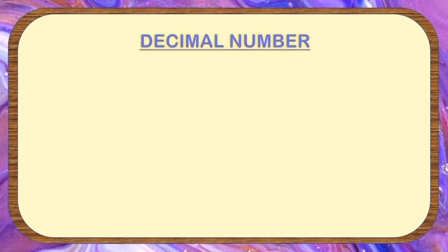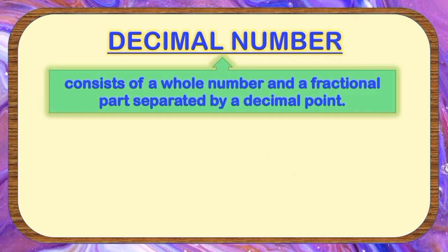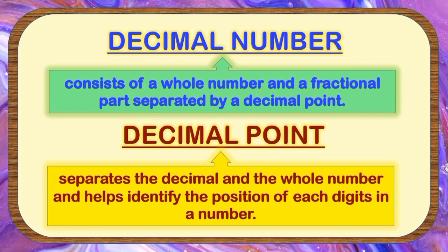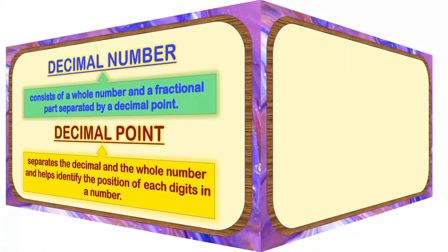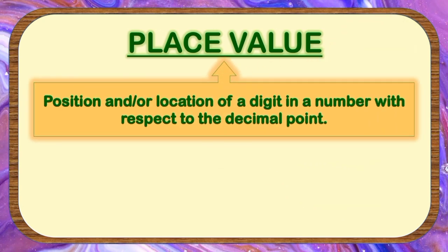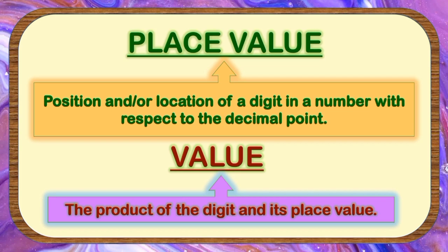The first term is a decimal number. This consists of a whole number and a fractional part separated by a decimal point. Next, decimal point: this separates the decimal and the whole number and helps identify the position of each digit in a number. The next term is place value: it is the position and/or location of a digit in a number with respect to the decimal point. Next is value: this refers to the product of the digit and its place value.